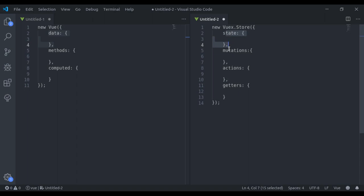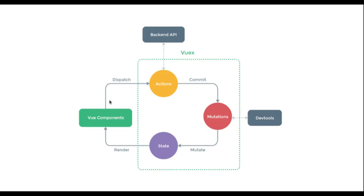We can change the state directly but it is not recommended. The main reason is that mutations can track the changes in state, which is very useful for debugging in the dev tools. Now let's see the lifecycle of the Vuex store. The component dispatches an action — that action is responsible for business logic and communicating with the backend API. If we need to change the data, it commits the mutation, and that mutation tracks the changes. It also communicates with the dev tool for debugging. Then that mutation updates the value of the state. Because state is reactive, it is rendered everywhere in the component.